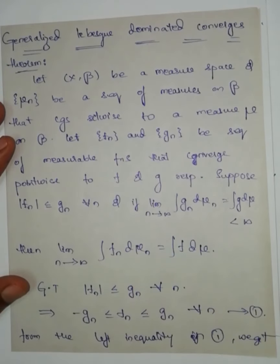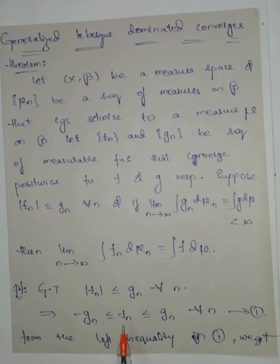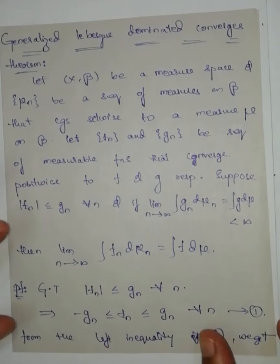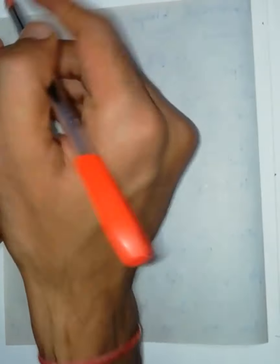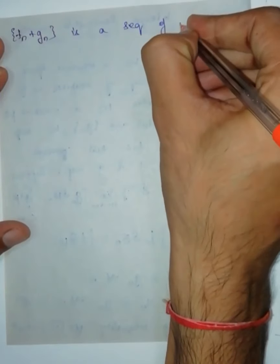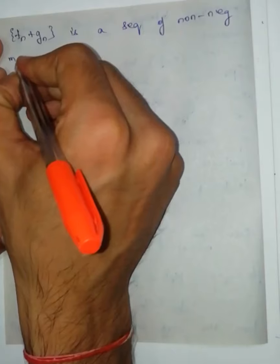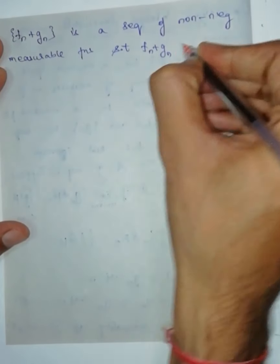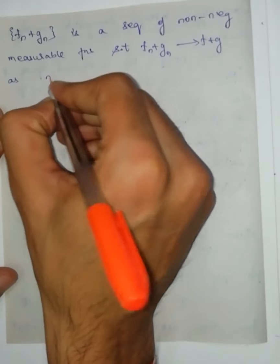Since f_n is a measurable function and g_n is a measurable function, f_n + g_n is also a measurable function. From the left inequality we see that these are non-negative. Therefore f_n + g_n is a sequence of non-negative measurable functions which converges to f + g, because f_n converges to f and g_n converges to g, so f_n + g_n converges to f + g.